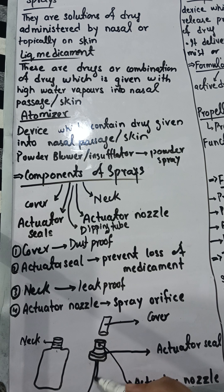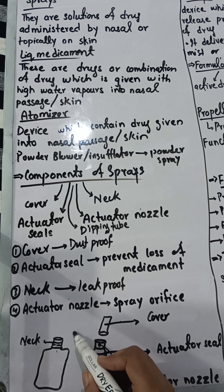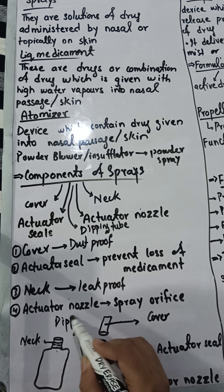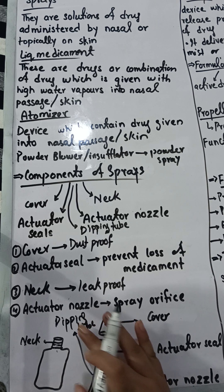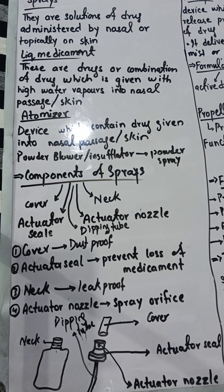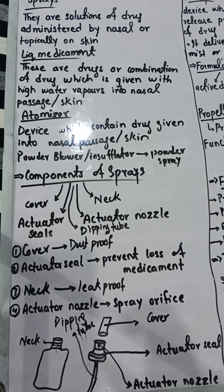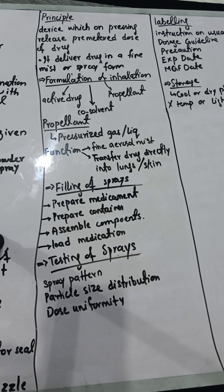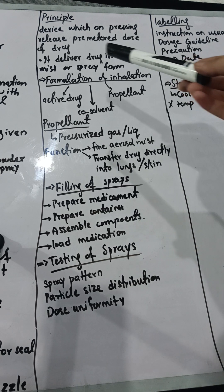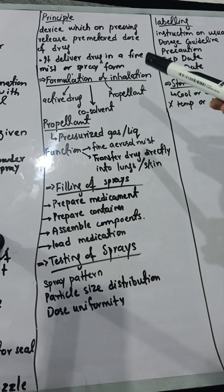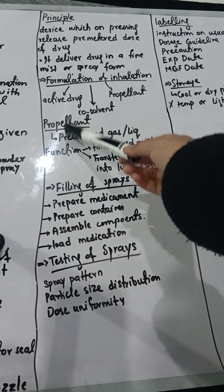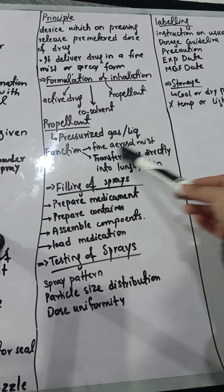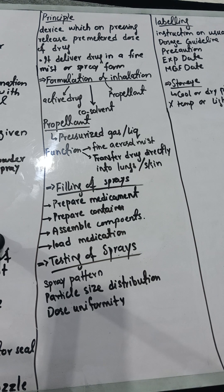Now let's move on to the principle. The device works on pressing, which releases a pre-metered dose of the drug. It delivers the drug in the form of a fine mist — a spray formulation. It contains an active drug, co-solvent, and propellant. The propellant is a pressurized gas whose function is to produce a fine aerosol mist and to transfer the drug directly to the nasal passage or the skin.